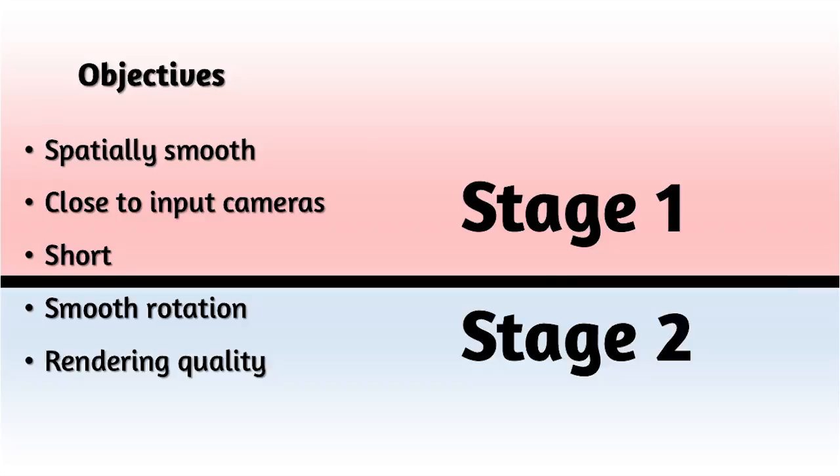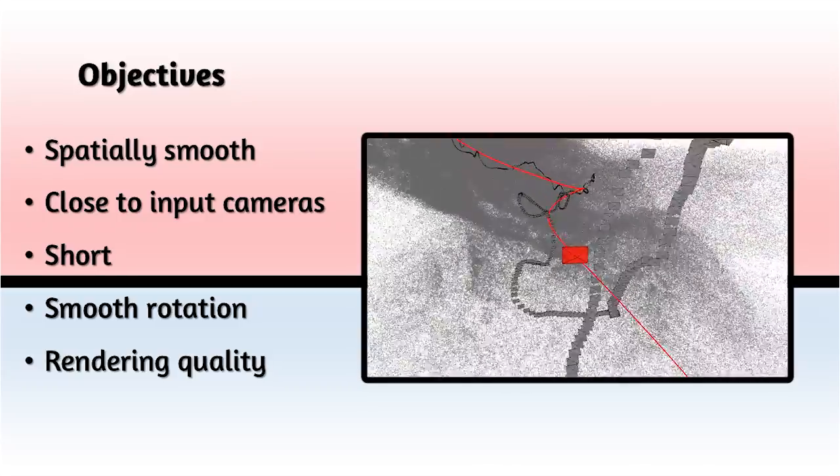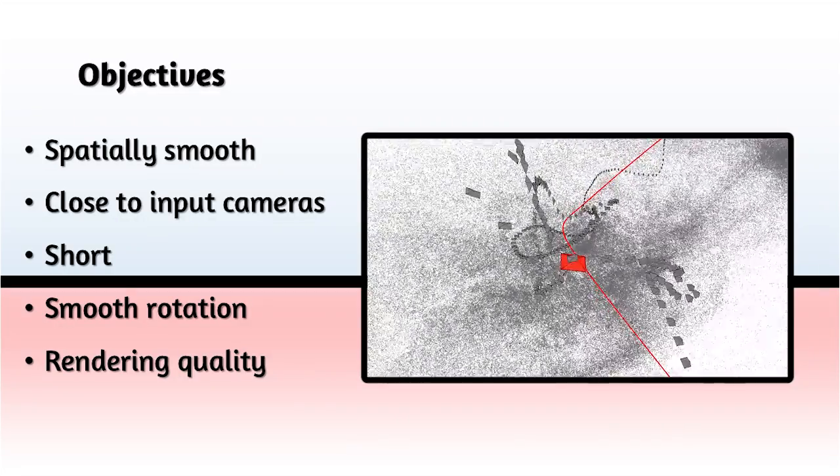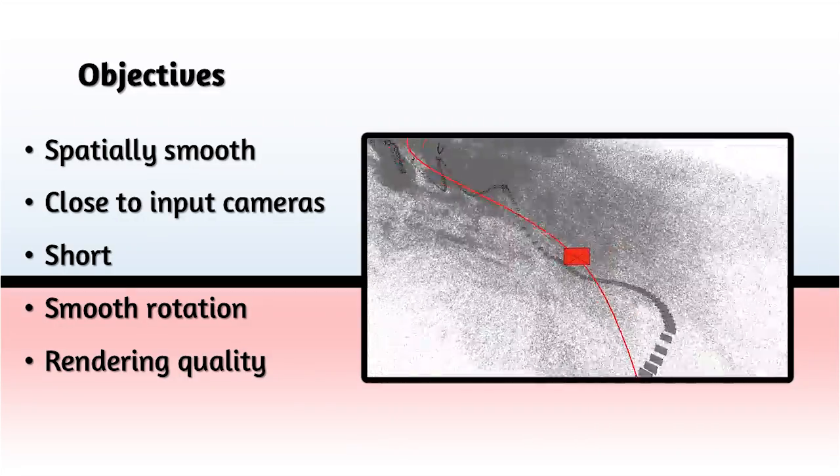We first optimize the location of the path using spline fitting. In this stage, we ignore orientation. Next, we optimize the orientation of the path while keeping the previously computed position curve fixed.